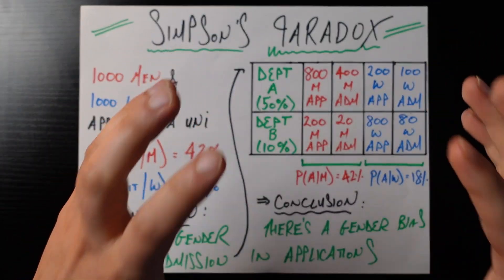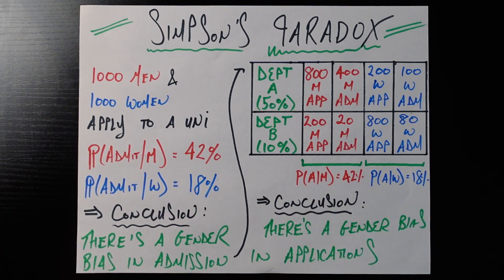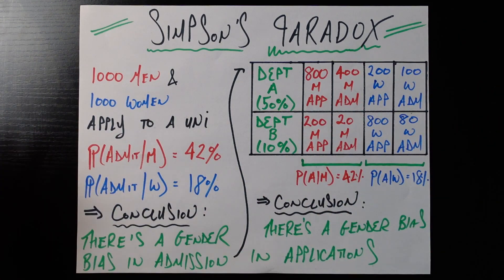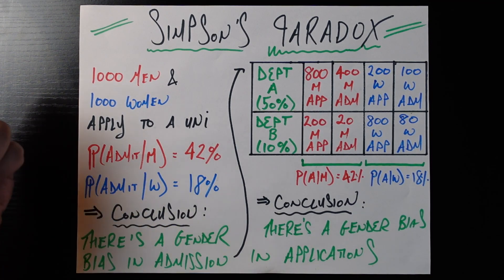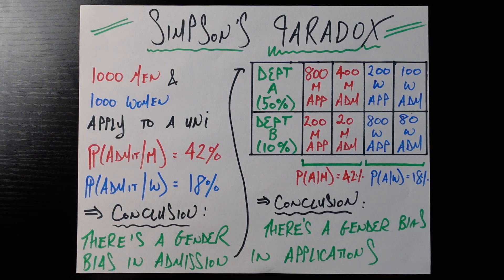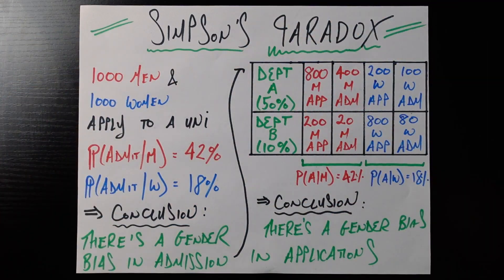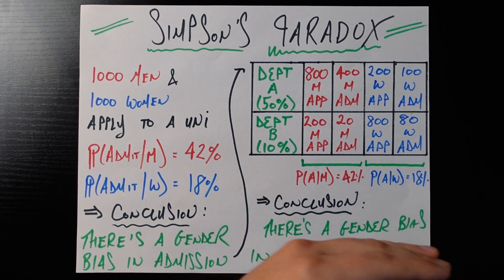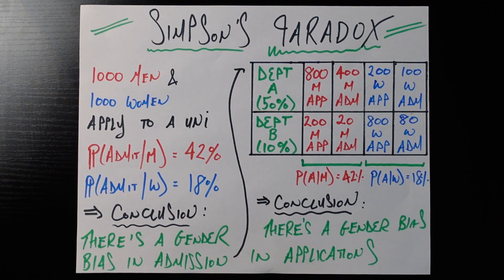So looking at these global statistics would imply there's some kind of gender bias in admissions. But looking at this breakdown by department shows us there's actually a bias. There is a gender bias, but it's not in admissions, it's in applications. Women are more likely in our hypothetical situation here and also in the UC Berkeley actual data to apply to those departments that are more highly selective. And because they self-selected themselves into those categories, they're less likely to get in. Which means that if you zoom out globally, the school ends up just accepting less women. But that's because this gender bias in applications has propagated, has flowed forward into a gender bias in admission.